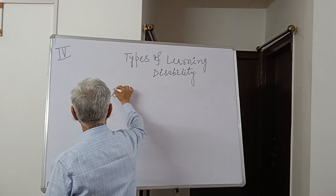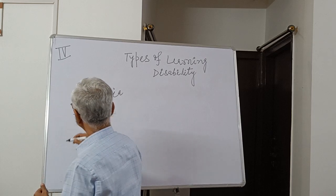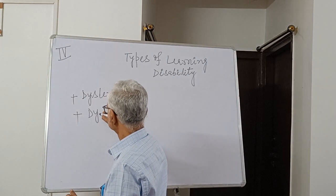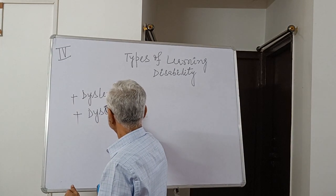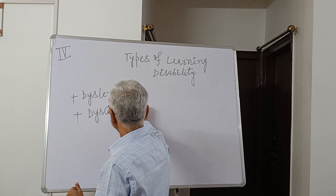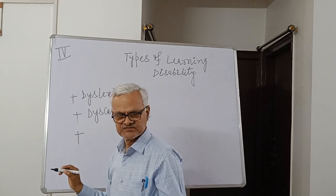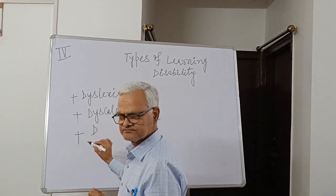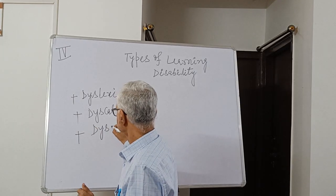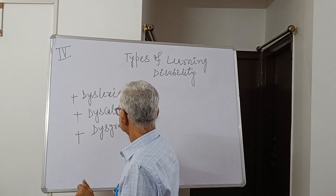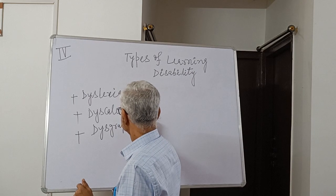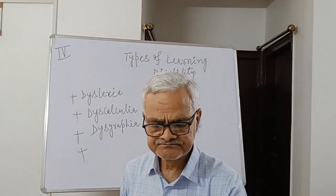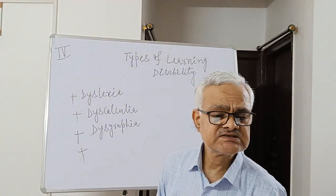Number one is Dyslexia. Number two is Dyscalculia. Number three is Dysgraphia. Number four is Dyspraxia.